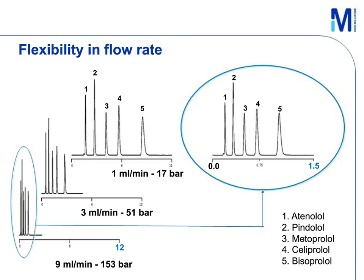Due to excellent mass transfer properties of the monolithic skeleton, high-speed separation can be easily achieved by simply increasing flow rate. Five beta blockers are very well separated with good peak symmetry at 1 mL per minute with a back pressure of only 17 bar and a run time of about 12 minutes. Once we increase the flow rate to 9 mL per minute, we achieve the same high-quality separation in less than one minute, and the column back pressure is only 153 bar — well below the regular HPLC instrument pressure limit.